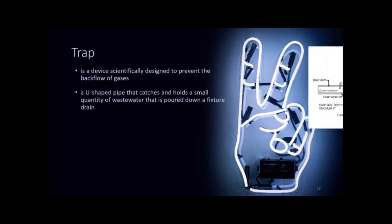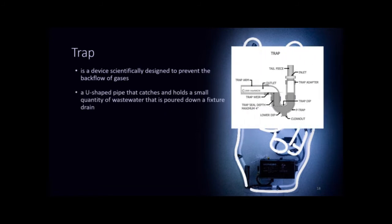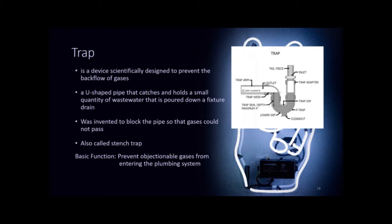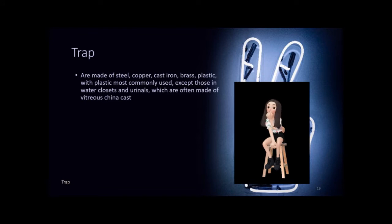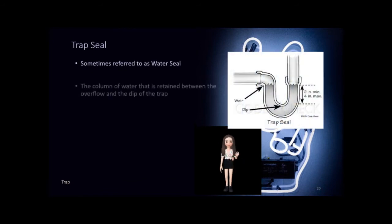A trap is a device scientifically designed to prevent the backflow of gases coming from the septic tank or sewer line passing through the outlet of the fixture. It is a U-shaped pipe that catches and holds a small quantity of wastewater poured down from a fixture drain. It was invented to block the pipe so gases didn't pass — it is also called a stench trap. The basic function is to prevent objectionable gases from entering the plumbing system by forming a mechanical barrier against the passage of sewer air. In 1856, the first trap in the U.S. was innovated. Traps are made of steel, copper, cast iron, brass, or plastic, with plastic most commonly used except in water closets and urinals.